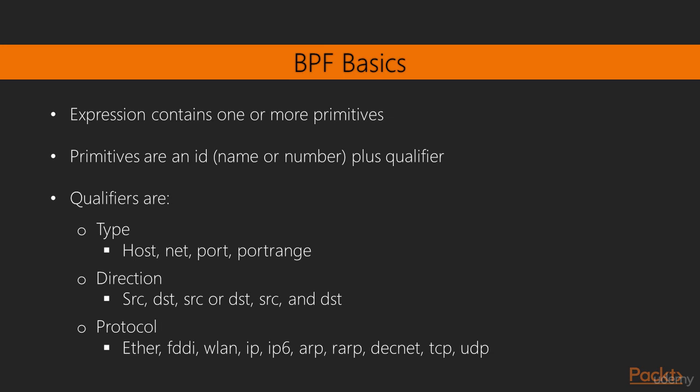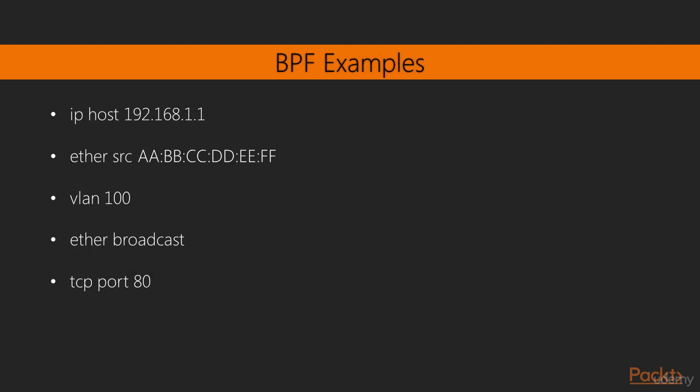For the type, it could be an individual host, a network, a port, or a port range. The direction can be either the source or the destination, source or destination, or source and destination. And the protocol — whether it's Ethernet, FDDI, wireless LAN, IP, IPv6, ARP, RARP, DECnet, TCP, or UDP. You have to define these different pieces that you want, how you want to limit your traffic, and the values that go with them — the ID, the name or number — to go along with these qualifiers. I have some examples here so that it can make more sense as to how to create a BPF expression.